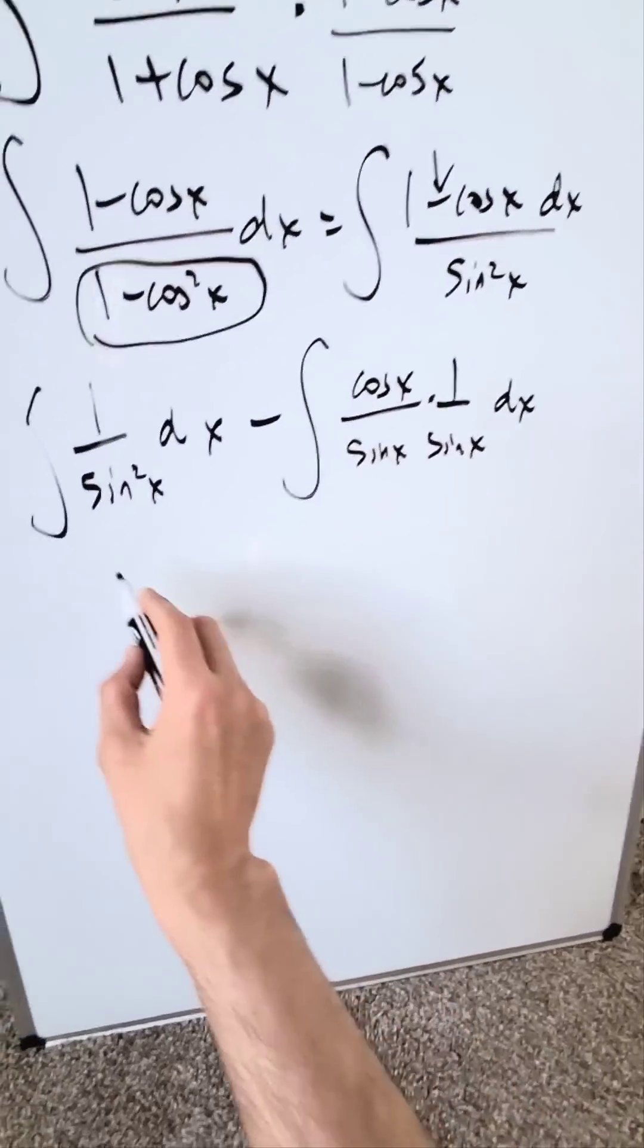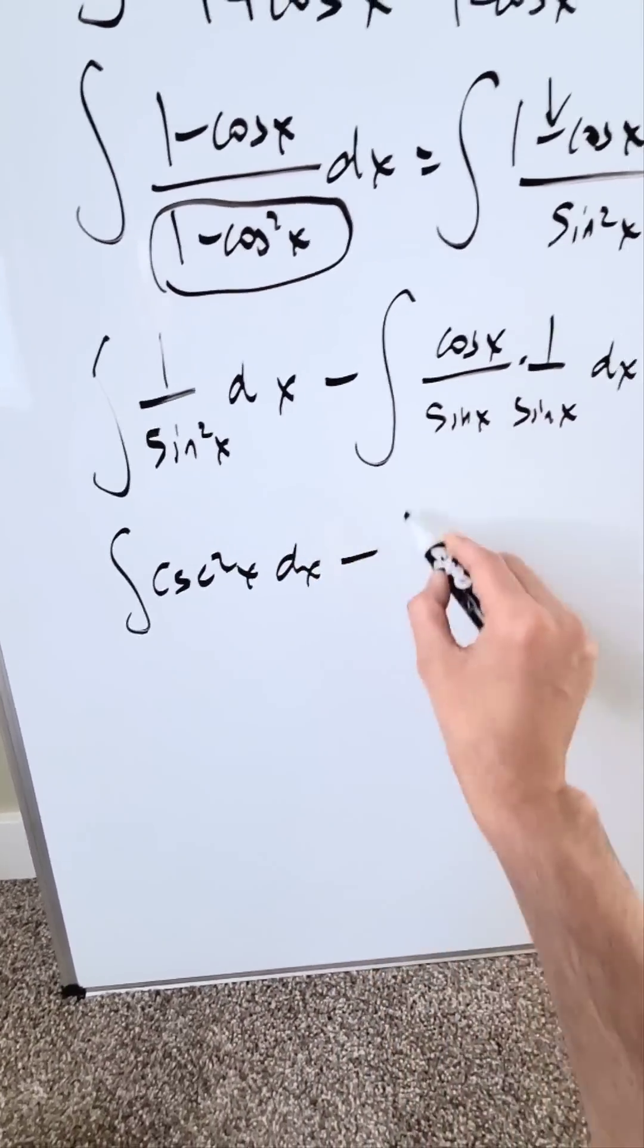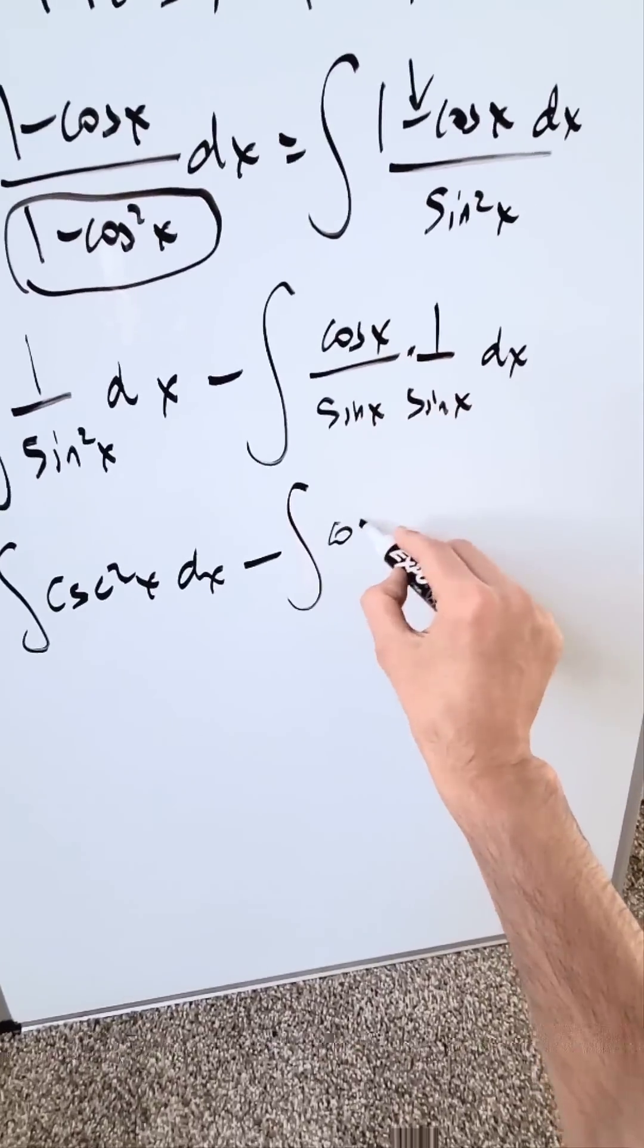It's a sine square x. I'm looking over here at cosecant square x dx minus. Here I really have a cotangent x times a cosecant x dx.